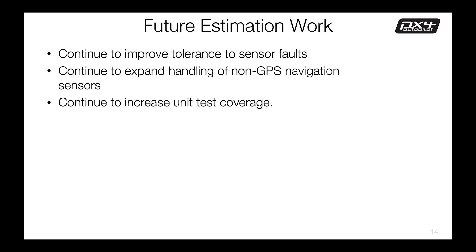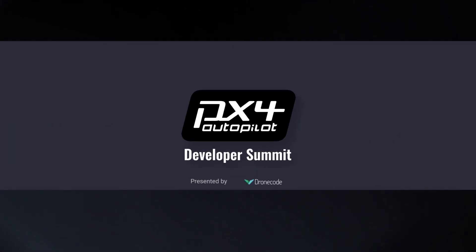For future work, we intend to continue prioritizing items that improve tolerance to sensor faults. This will include further work to support a multi-lane architecture, which the F7 processor will provide sufficient overhead for, as well as expansion of the ability to handle combinations of sensors to expand the envelope of non-GPS navigation. Continuation of test coverage improvements is also important. Thank you for your attention and I look forward to answering your questions.